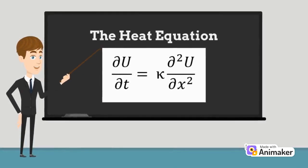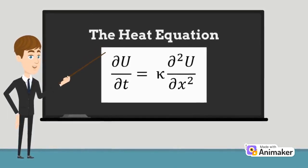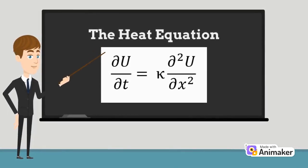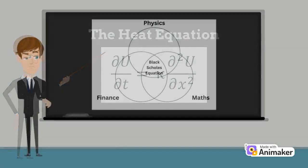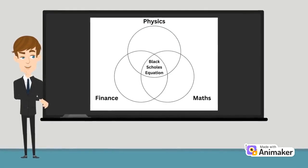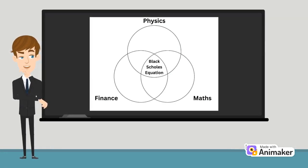The intriguing aspect of the Black Scholes equation is that it is derived from the diffusion equation, which is also known as the heat equation. What's interesting is that here we see a direct overlap of the use of mathematical tools in finance and physics.